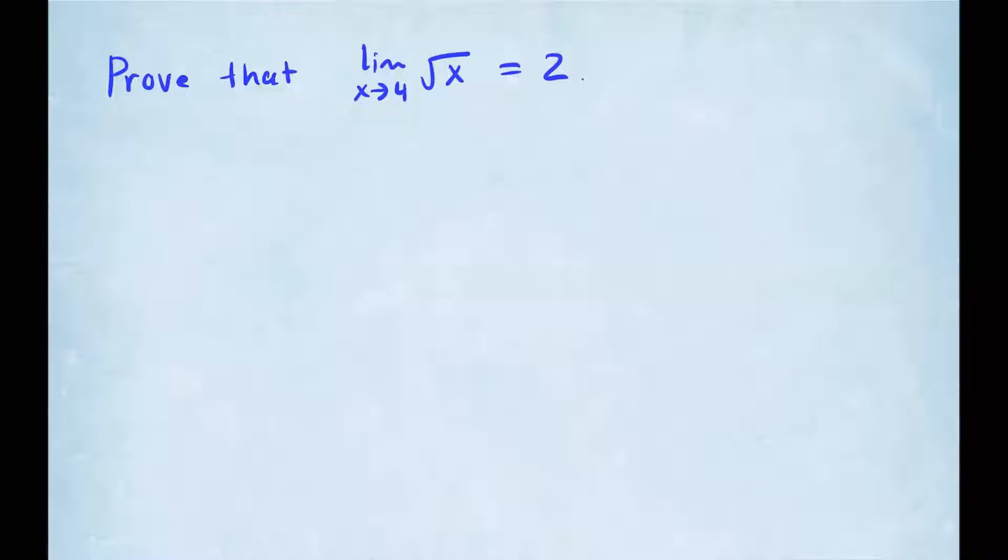So let me remind you of what the epsilon-delta definition of a limit is. For all epsilon greater than 0, there is a delta greater than 0 such that for all x, if the absolute value of x minus 4 is less than delta, then the absolute value of square root of x minus 2 is going to be less than epsilon. So that's how you set up the epsilon-delta definition.